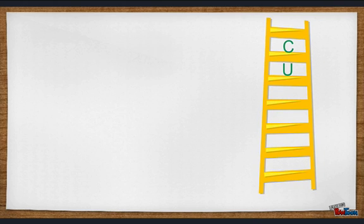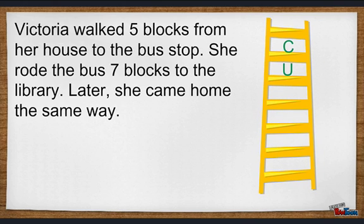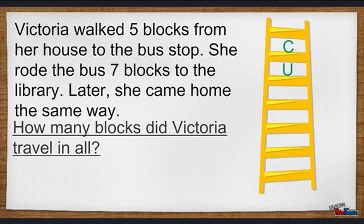The next step is U. U stands for underline. Now we need to underline what the problem is asking us. Let's underline 'how many blocks did Victoria travel in all.' So far we circled five and seven and underlined 'how many blocks did Victoria travel in all.'